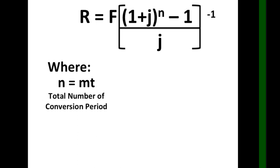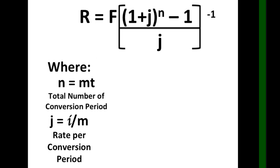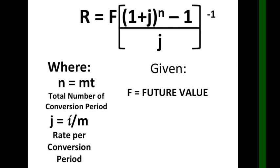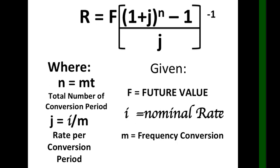We need the following requirements: n equals m times t, where n is the total number of conversion periods; j equals i over m, the rate per conversion period. You may go back to Part 1 to understand what n and j are. The given values are: F as the future value, i as the nominal rate, m as the frequency of conversion, and t as the time in years.